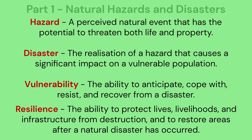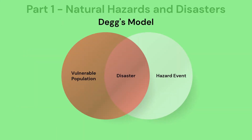And finally, resilience is the ability to protect lives, livelihoods, and infrastructure from destruction, and to restore areas after a natural disaster has occurred. It is important to understand that a disaster only occurs when a vulnerable population is exposed to a natural hazard. The model here is called Degg's model. It is a useful way to visualize the theory that a disaster only occurs when a vulnerable population is exposed to a hazard.